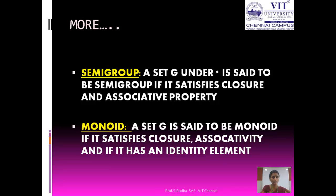Let us see the definition of a semi-group. A set G with operation star is said to be a semi-group if only the first two axioms are satisfied, that is closure and the associative property. A set G is said to be a monoid if it satisfies closure, associativity, and if it has an identity element — that is, the first three axioms of the definition of a group.